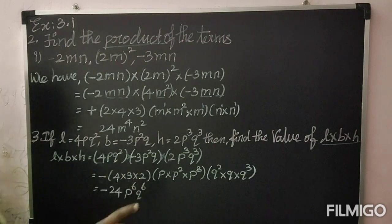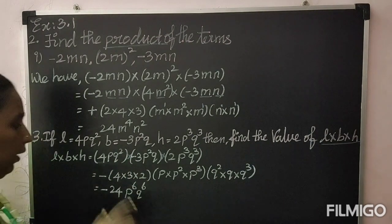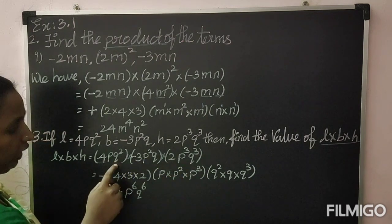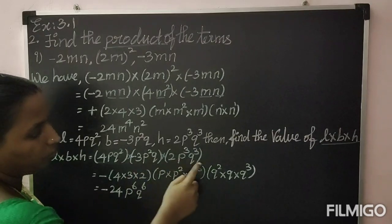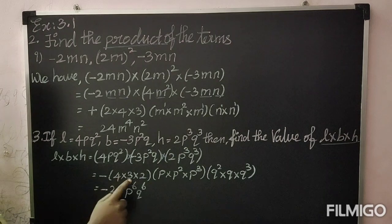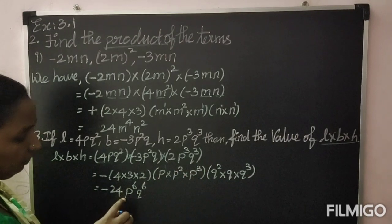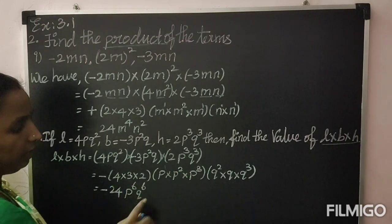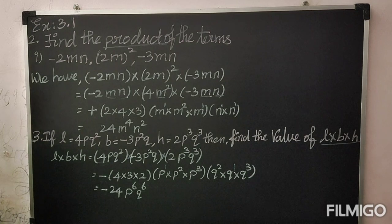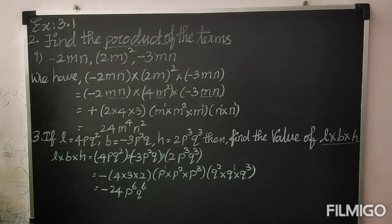4 into 3 into 2. Then p into p squared into p cubed; q squared into q into q cubed. So minus, 4 threes are 12, 12 twos are 24. For p: adding powers 1+2+3, you get p power 6. For q: powers 2+1+3, you get q power 6. So the answer is minus 24p power 6 q power 6. Therefore L × b × h equals minus 24p⁶q⁶.